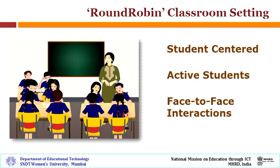Observe the graphic carefully. Here you can see that the teacher has divided the class into several groups. In Round Robin sessions, based on the strength of the classroom, the teacher can divide the class into groups of three to five students per group.